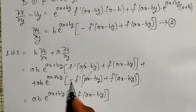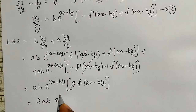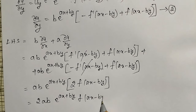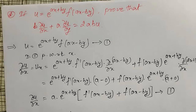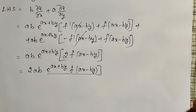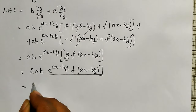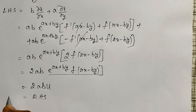Taking ab e raised to ax plus by as common, the f dash terms cancel. Therefore, I can write it as two times ab into e raised to ax plus by into f of ax minus by. And what is e raised to ax plus by into f of ax minus by? That is the given term u, from equation one. So substituting, LHS equals two times ab into u — this is my RHS. Therefore, LHS equal to RHS is proved.